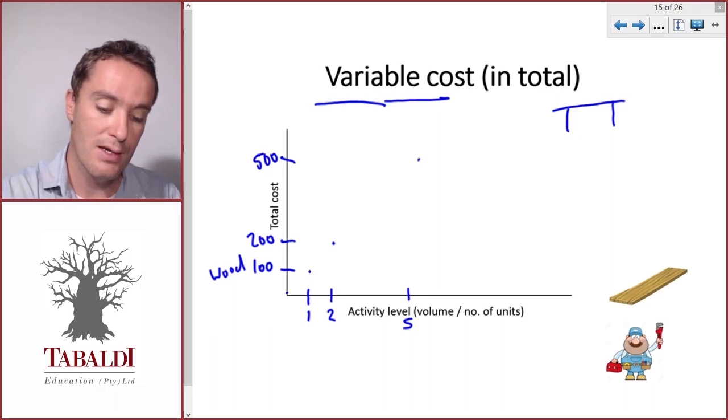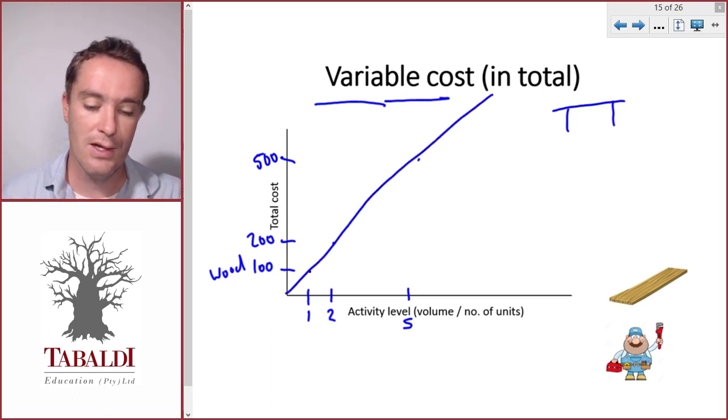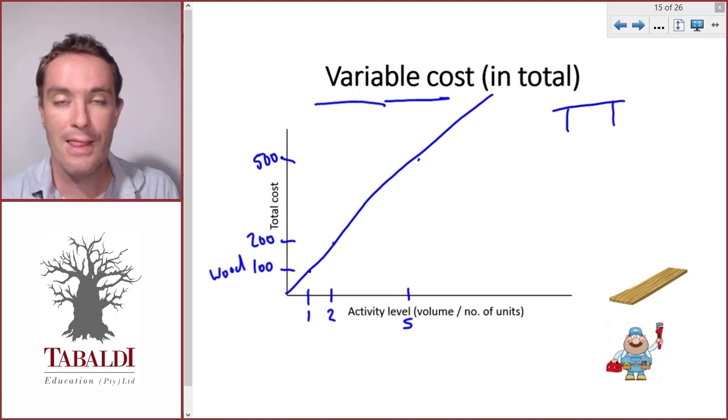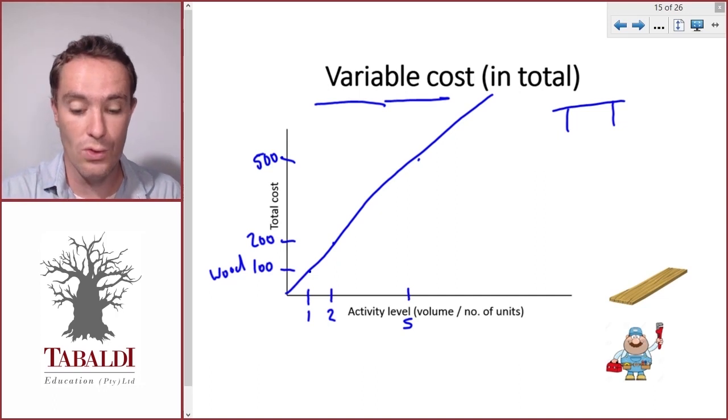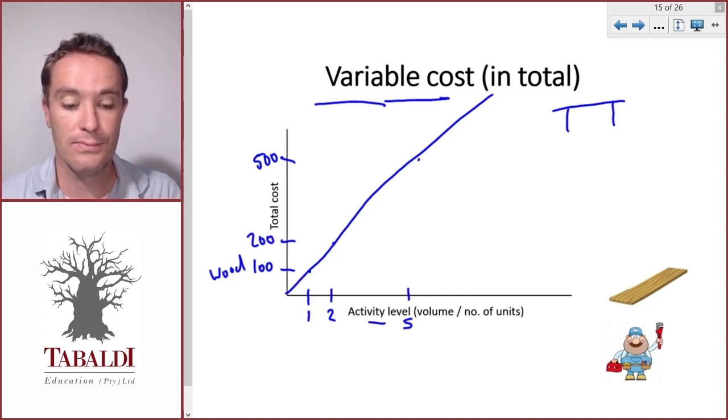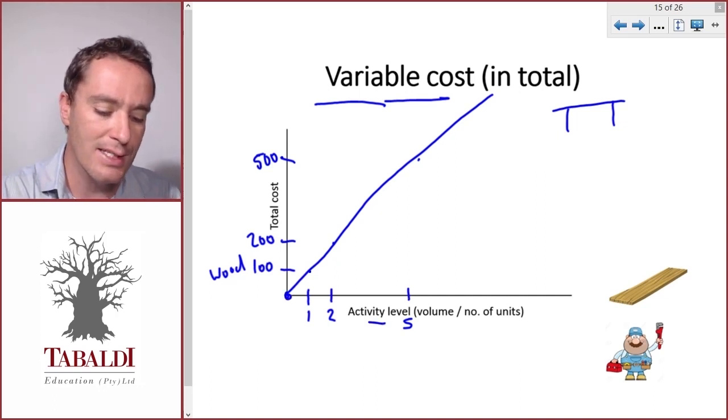A hundred per table is five hundred in total. So if we draw a line through these points you can see it's a straight line that increases in direct proportion to the number of tables or the activity level, and it starts right at zero.